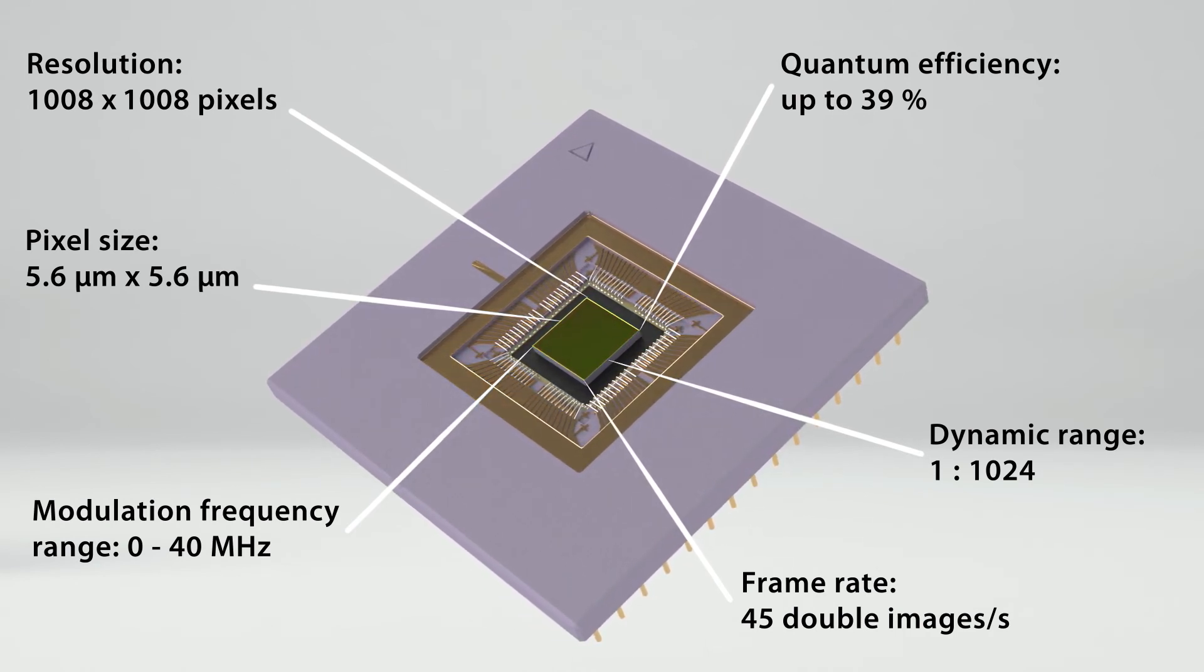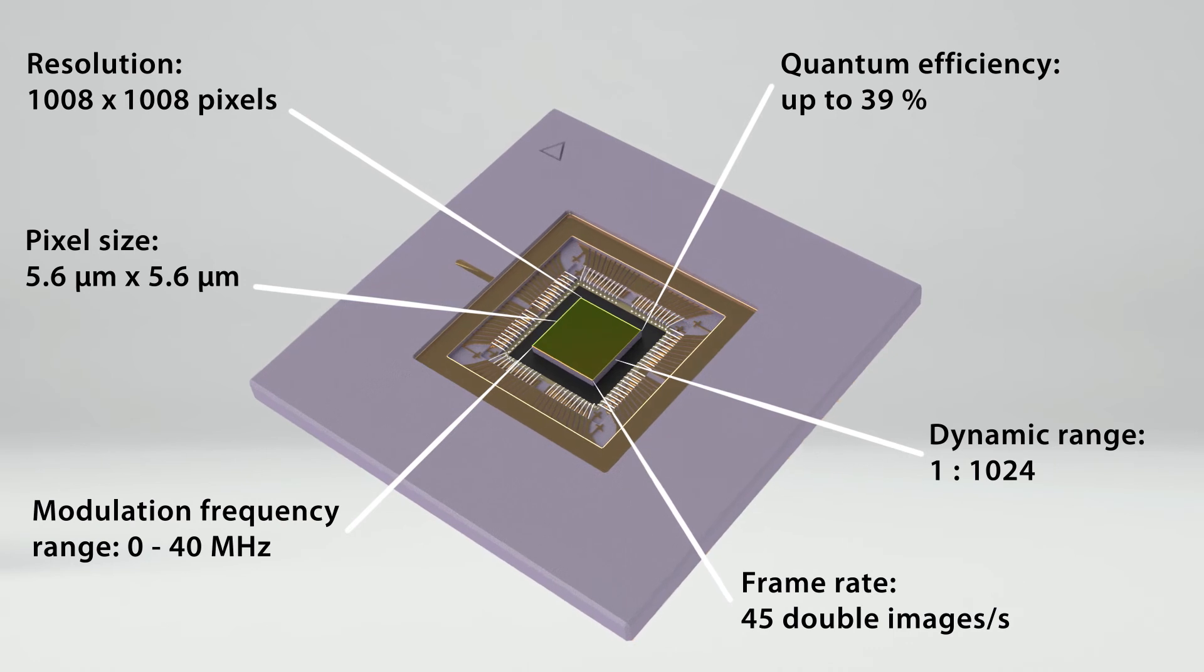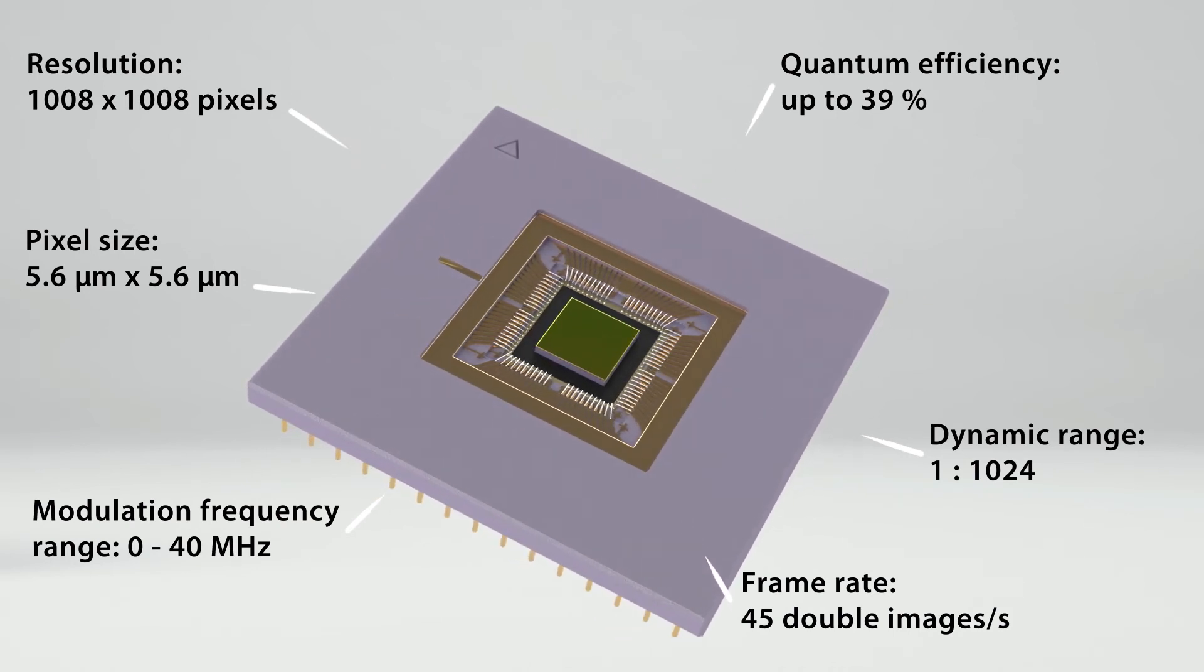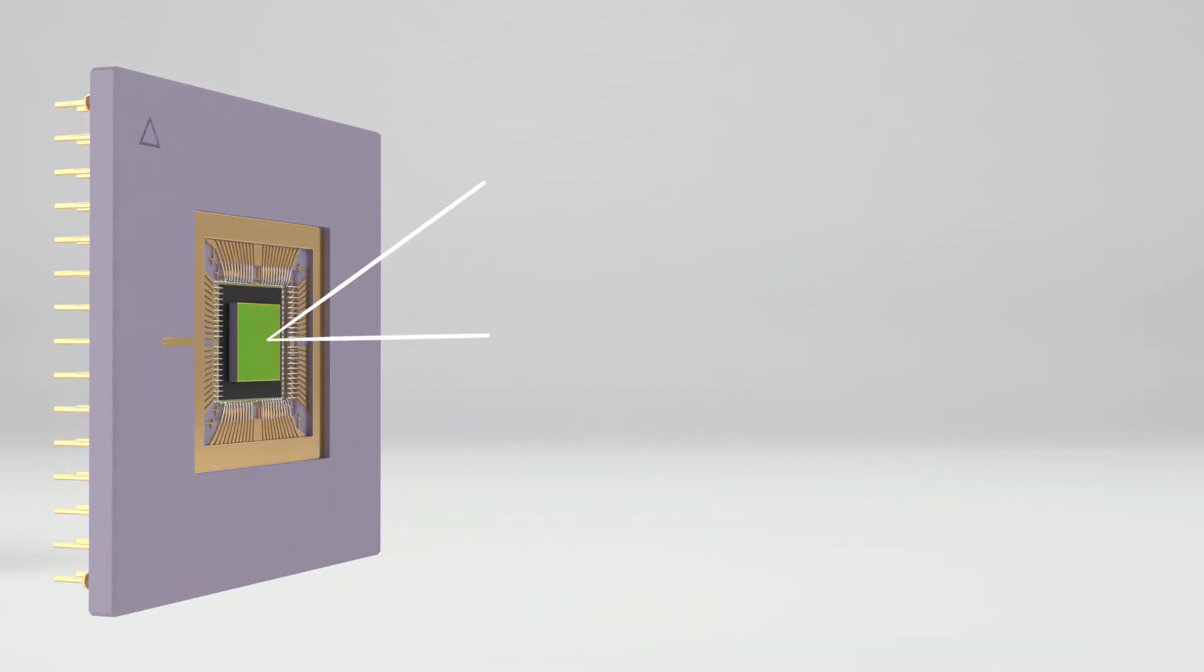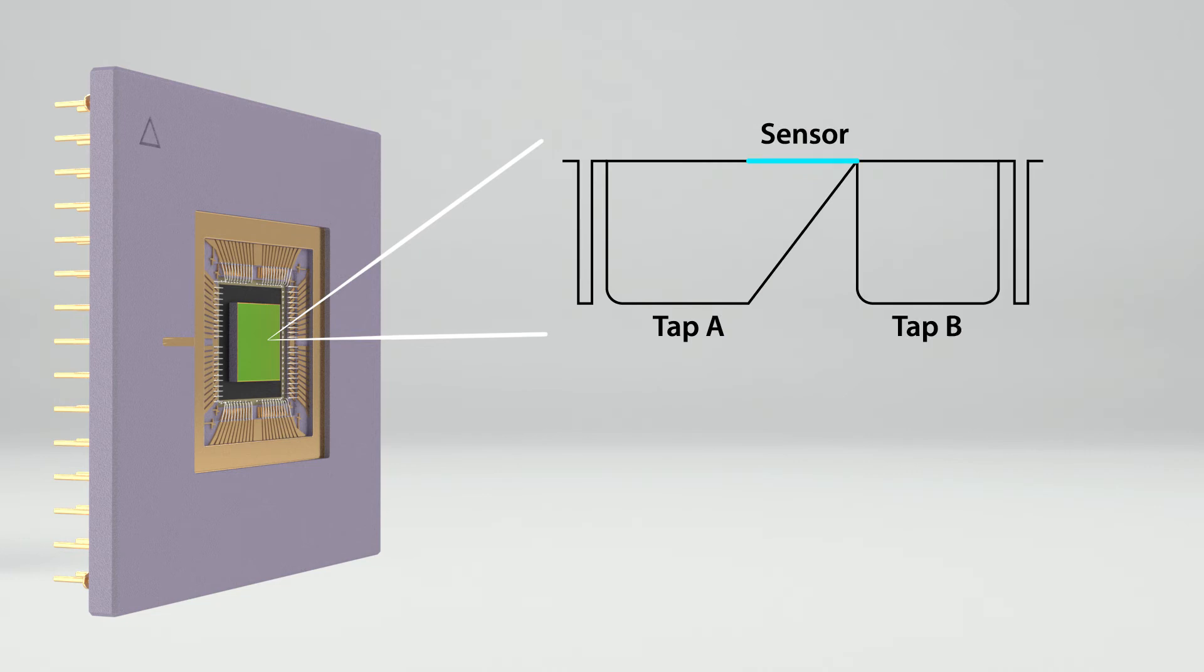It was developed by CSAM and PCO from 2007 to 2012. In this unique image sensor, each of the 1008x1008 pixels has two charge collection areas, tap A and tap B.